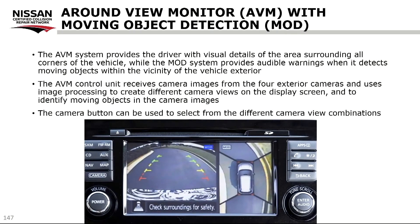Let's continue talking about the around view monitor with moving object detection, often referred to as MOD. The AVM system provides the driver with visual details of the area surrounding all corners of the vehicle, while the MOD moving object detection system provides audible warnings when it detects moving objects within the vicinity of the vehicle exterior. The AVM control unit receives camera images from the four exterior cameras and uses image processing to create different camera views on the display screen and to identify moving objects.